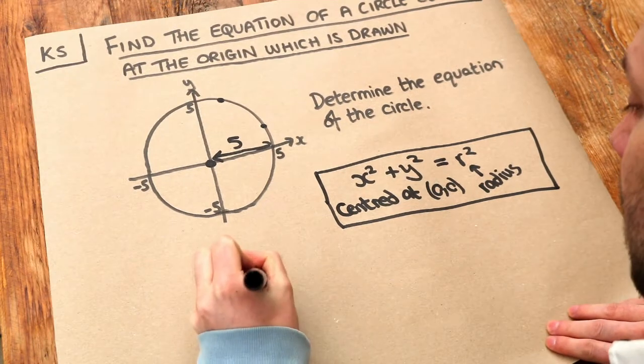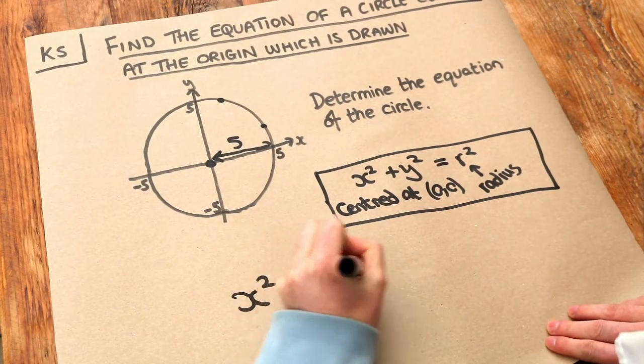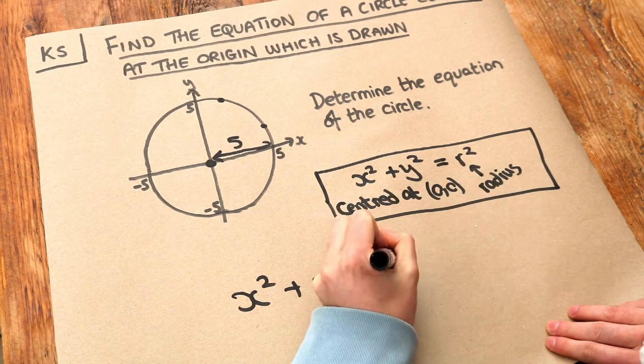So our equation is x squared plus y squared equals 5 squared, which is 25.